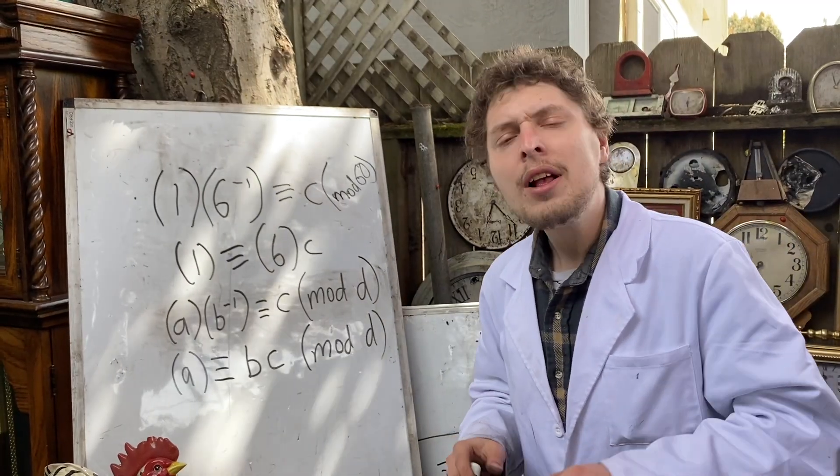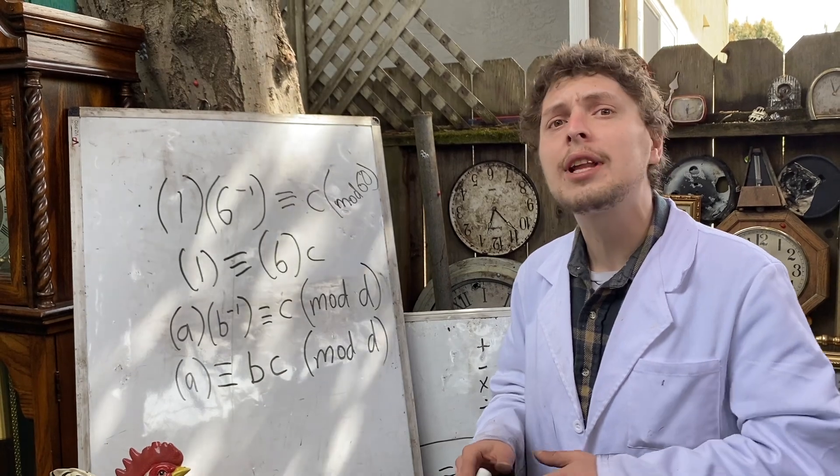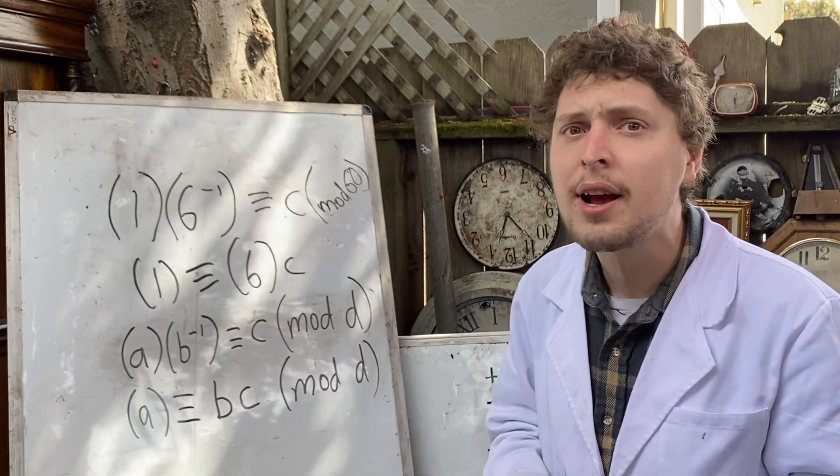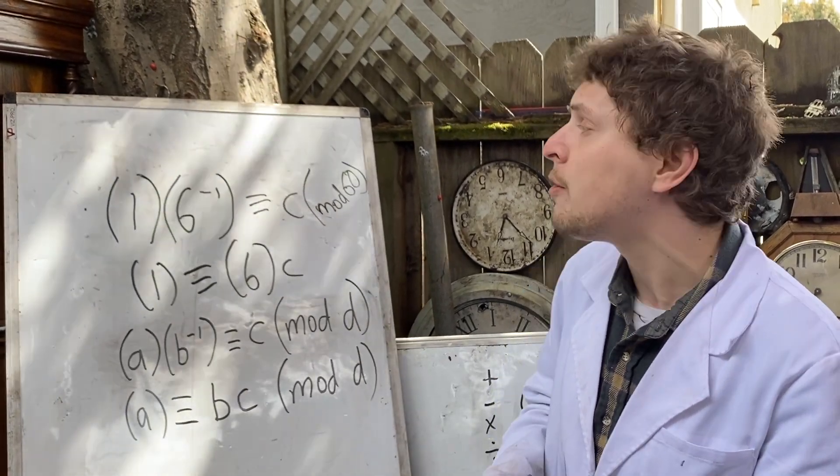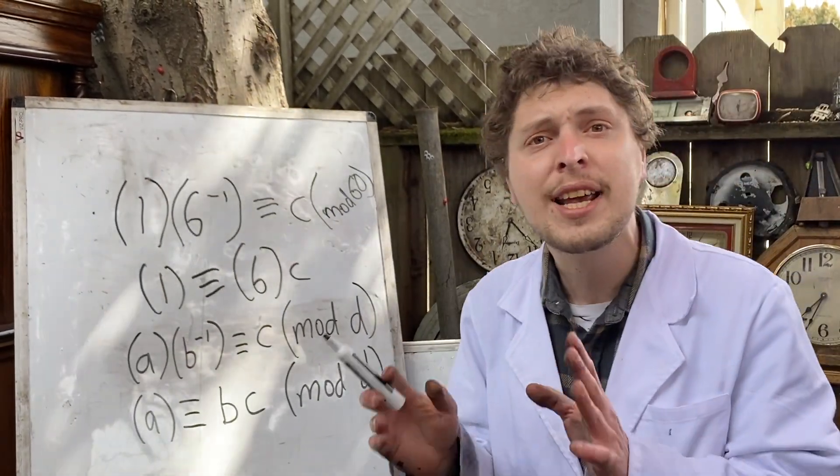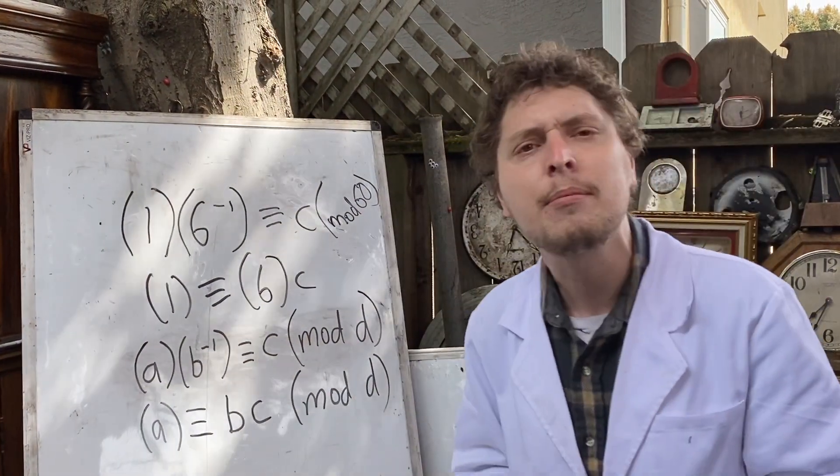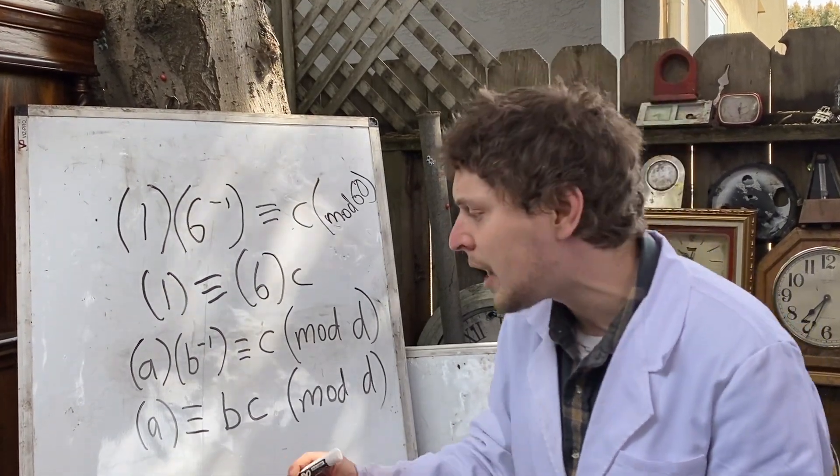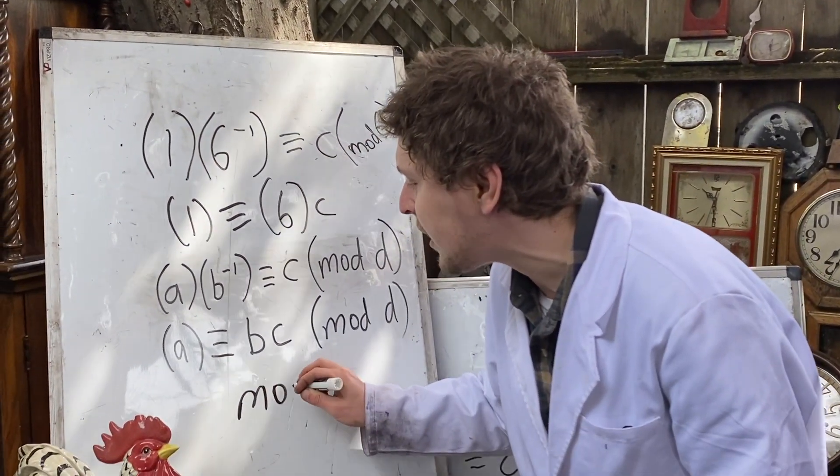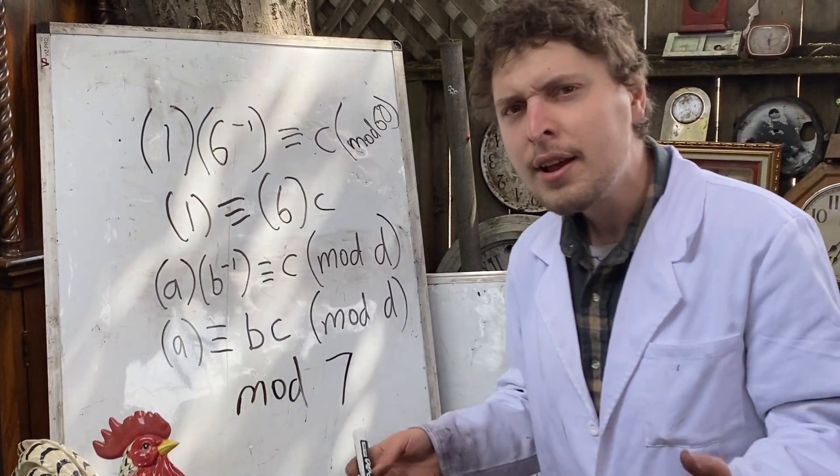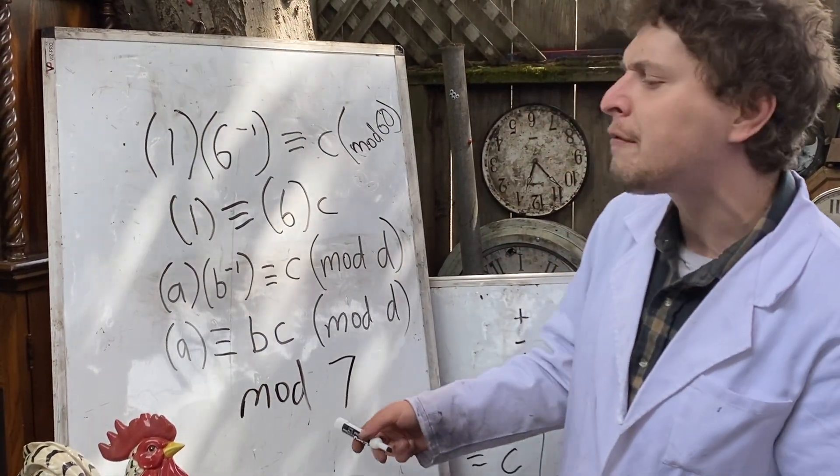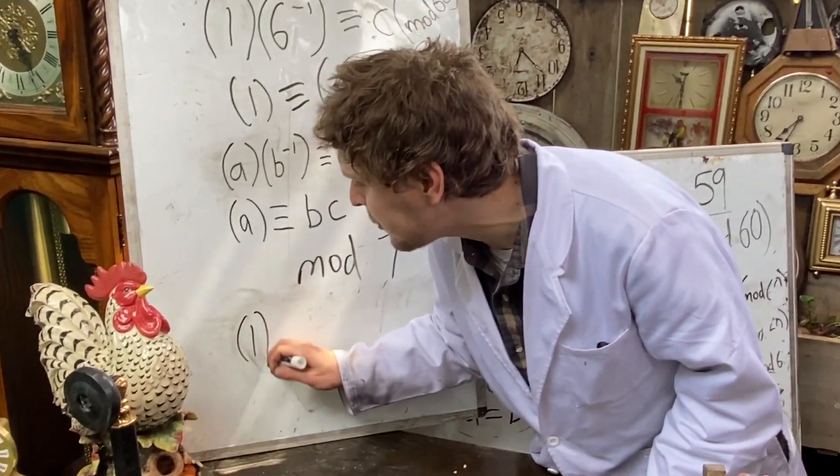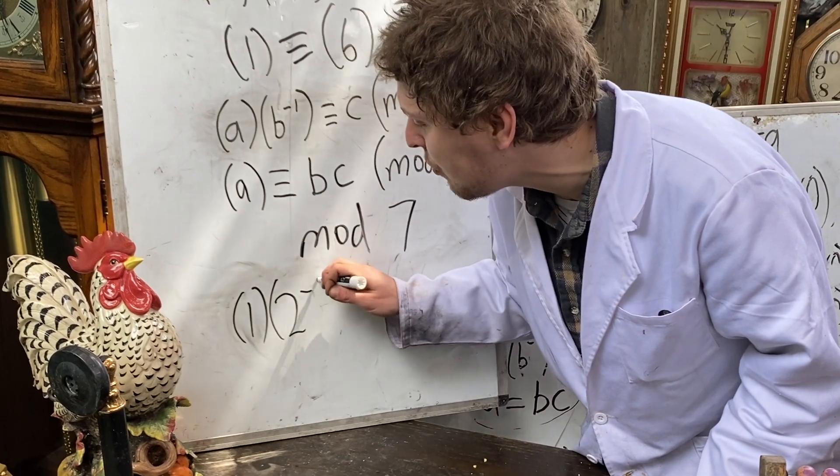Mod 60 here lets us see patterns that are like the minutes on a clock, and I could have also said seconds, because seconds also move in a cycle of 60. But that's not the only time that our life has cycles. We could also look at something like mod 7, which weekdays move in.